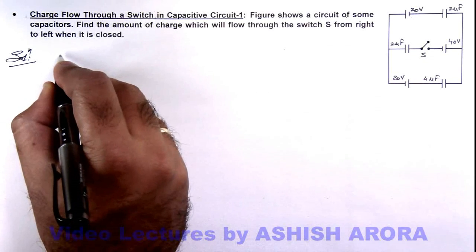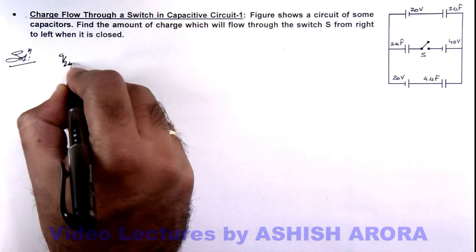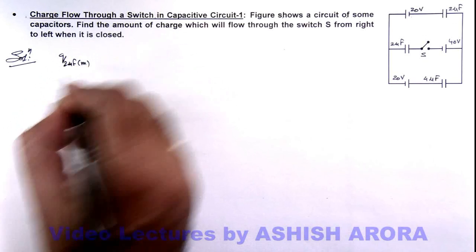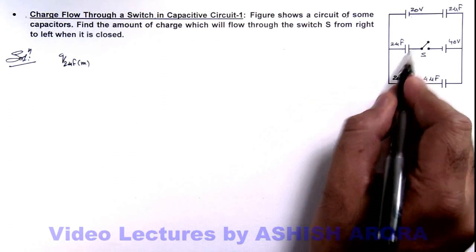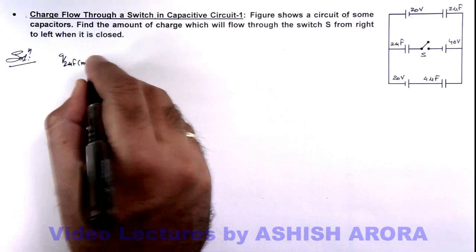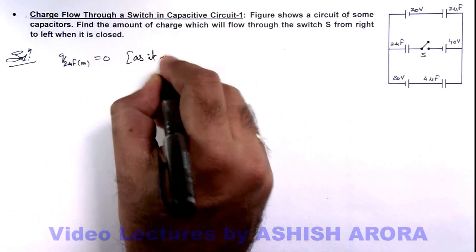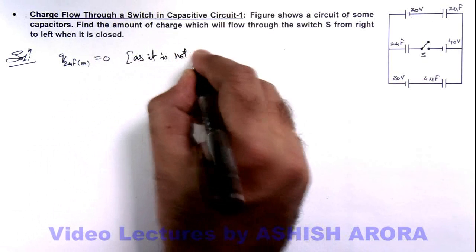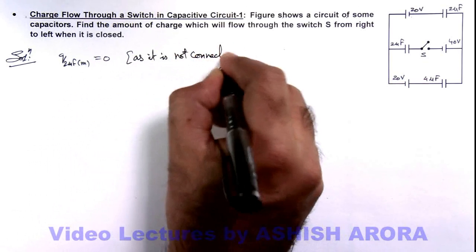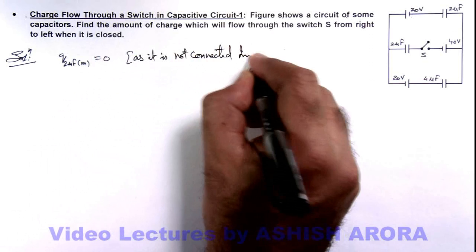So if we calculate the charge on the 2 microfarad middle capacitor—this 'm' denotes this 2 microfarad, not this one—this equals zero as it is not connected initially.